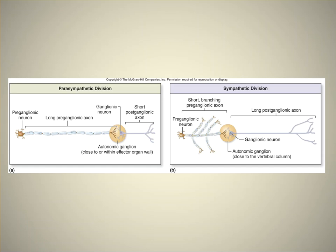Let's continue with the anatomical differences between the two divisions of the autonomic nervous system. To the left, the parasympathetic division.